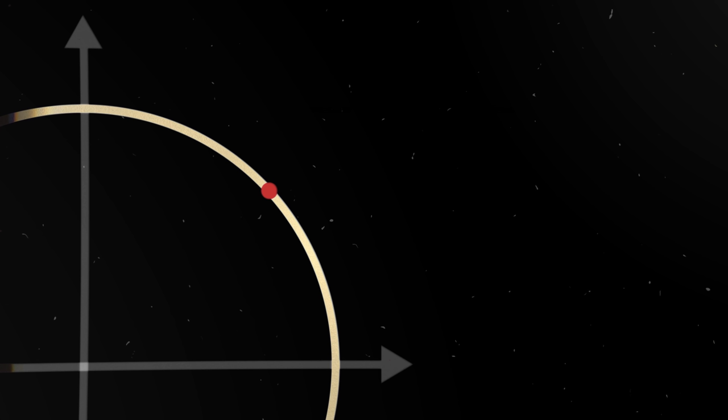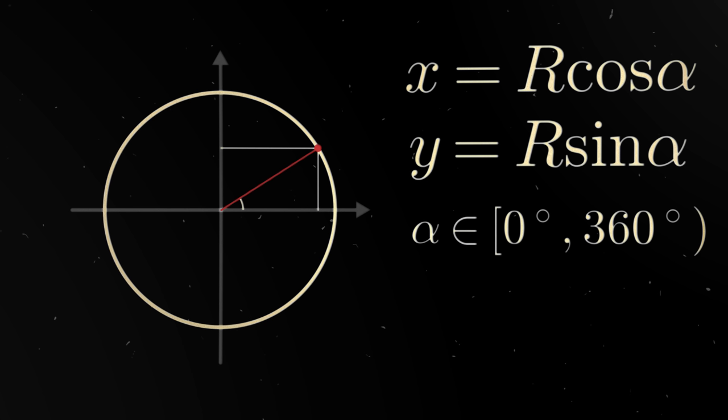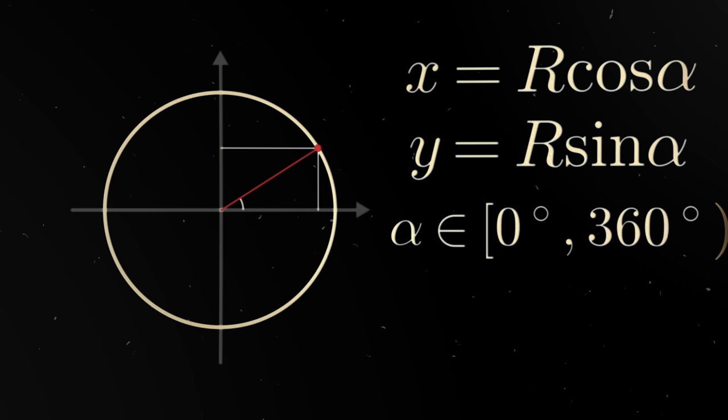You can describe a circle using a parametric equation. Take a point on a circle. Its x-coordinate is equal to the radius of the circle multiplied by the cosine of the angle. Its y-coordinate is equal to the radius multiplied by the sine of the angle. If we take all angles from 0 to 360 degrees, we will get all circle points. Such an equation is called parametric equation. That is, the x and y coordinates of the points are described through a parameter, the alpha angle.